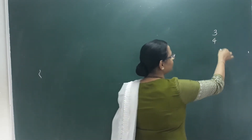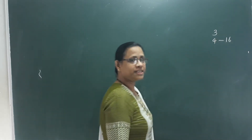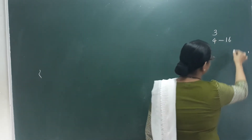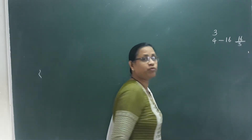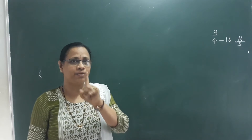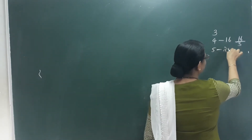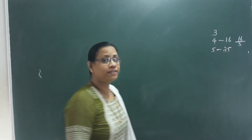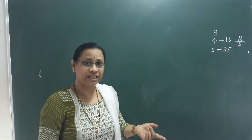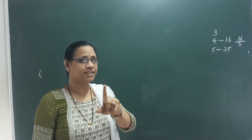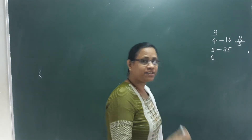Let's take an example. We take 4, and 4 squared is 16. We take the division of 16 by 3: 3 into 5 is 15, and the remainder is 1. Then we take 5: 5 squared is 25. We divide 25 by 3: 8 into 3 is 24, and the remainder is 1.